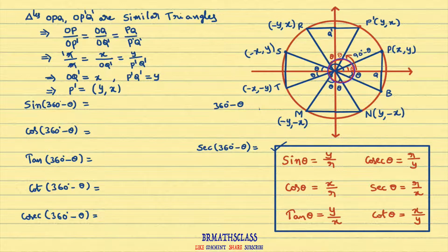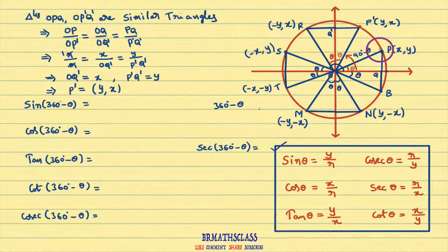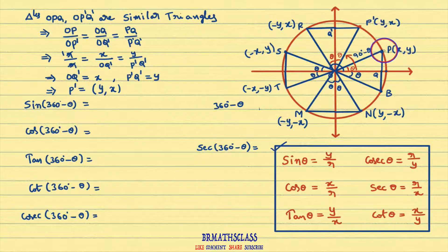Initially, observe here the ray OA. I rotated it through an angle theta such that the ray OP is formed. I considered the point P as (x, y). P is any point on the circle, and we consider P as (x, y).